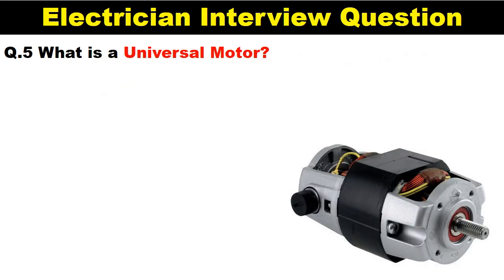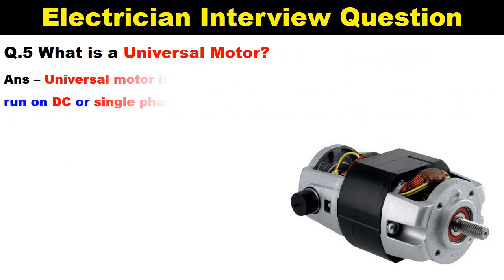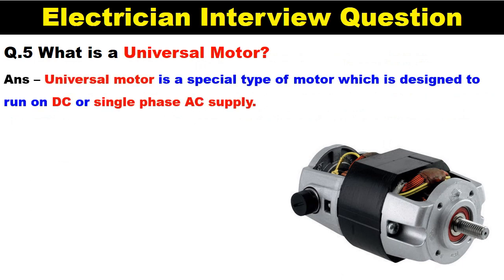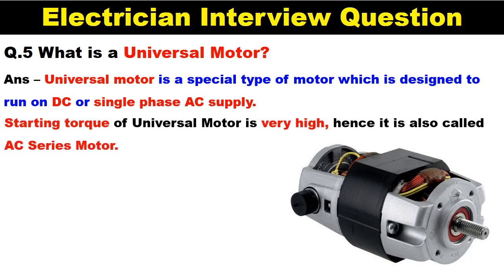In the last question it is asked: what is a universal motor? In an interview, if you are asked about a universal motor, you have to answer: universal motor is a special kind of motor which can run on DC power supply as well as AC power supply. The starting torque of this universal motor is also very high, which is why it is also known as the series motor of AC.